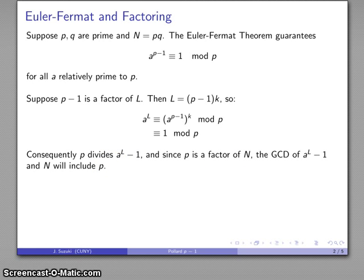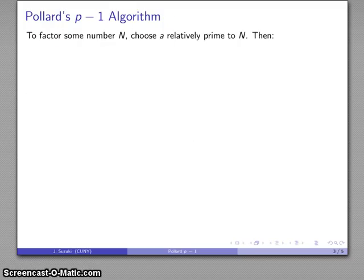And that gives us a way of factoring N with one slight problem: How do we find L? Because if a to the L is not congruent to 1 mod p, this doesn't work. So I have to know what the right value of L is in order to make this work. Well, it wouldn't be an algorithm if we didn't have some way of finding it.